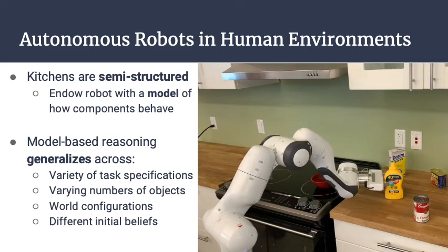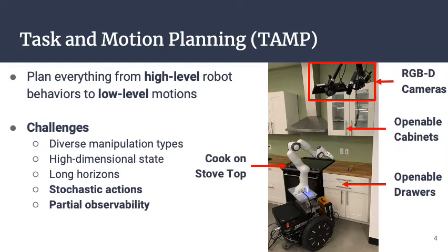This is why we believe using model-based reasoning — where we give the robot a model of what it can do — will enable the robot to generalize across a very large number of these circumstances. We formulate model-based reasoning in these environments as a task and motion planning problem, where the robot not only has to plan a sequence of objects to manipulate but also the low-level motions that can successfully achieve all these manipulations.